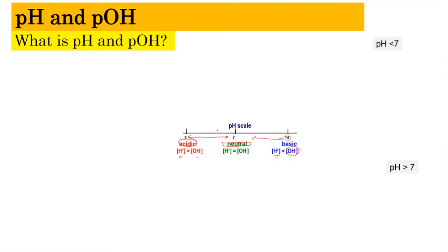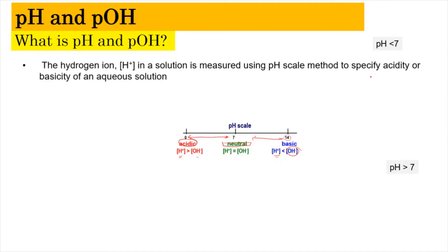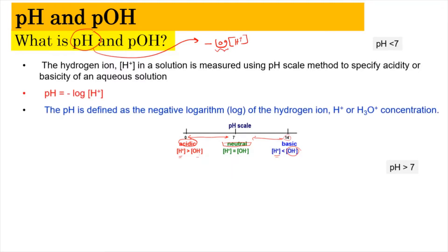Studying pH helps us specify the acidity or basicity of an aqueous solution. pH is equal to the negative logarithm of the hydrogen ion concentration, written as pH = −log[H⁺]. By definition, p refers to negative log and H refers to the H⁺ aqueous ion. If the concentration of H⁺ is higher, the pH value will be lower, indicating a more acidic region.